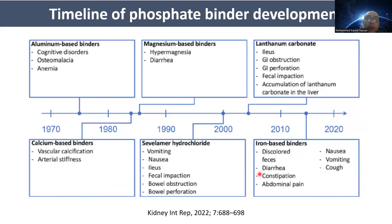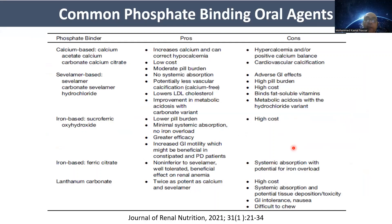This is a timeline of phosphate-binder development, starting with aluminum-based binders in the 1970s, progressing through calcium binders, magnesium binders, sevelamer, lanthanum, and most recently iron-based binders. Each has its own advantages and disadvantages.